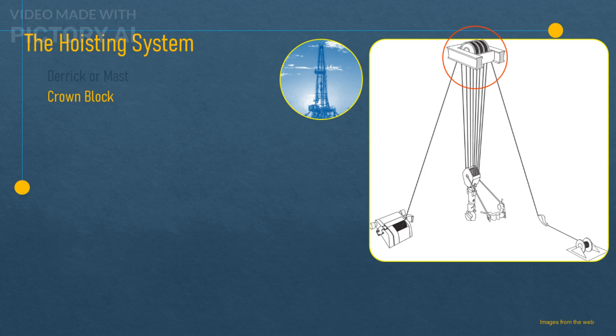The crown block. This is a set of pulleys or sheaves that are mounted at the top of the derrick. The crown block works with the traveling block to form the block and tackle system.